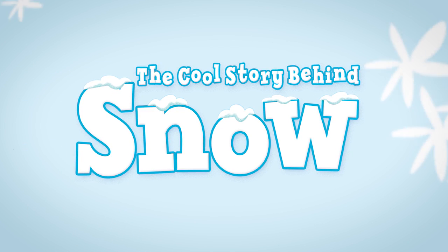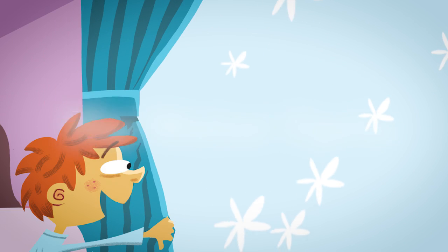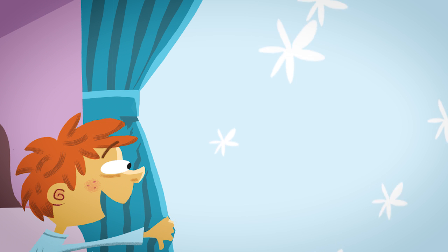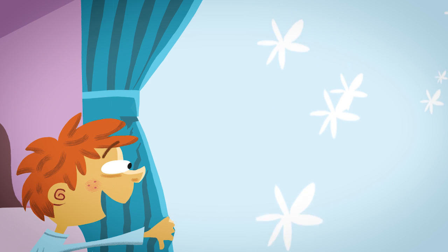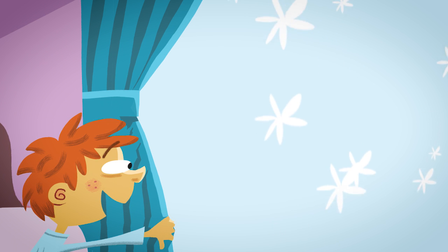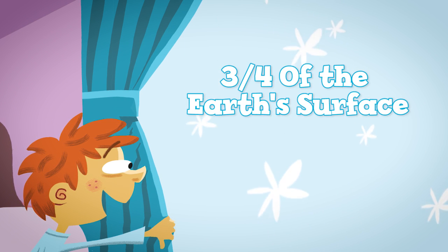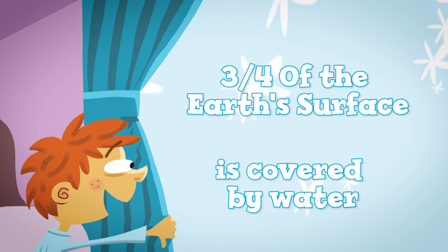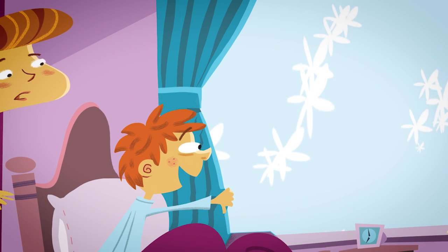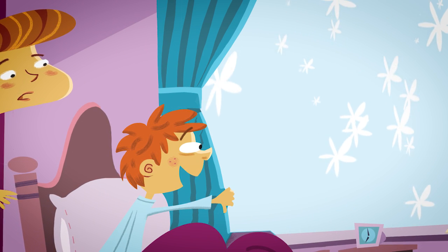The cool story behind snow. To better understand what makes it snow, you first need to know that about three-quarters of the Earth's surface is covered by water, and the oceans hold almost all of Earth's water.